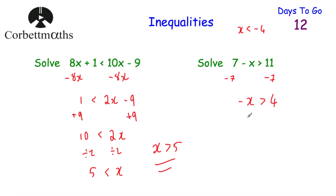Whenever you've got an inequality, you can change the signs, but if you change the signs you have to turn the inequality symbol around. So here we could change minus x to x and change 4 to minus 4 — multiplying by minus 1 — but then we must change greater than to less than, giving x is less than negative 4.